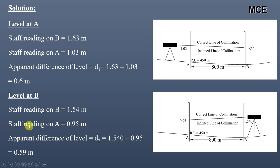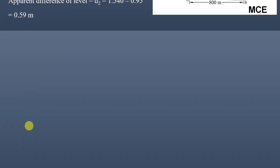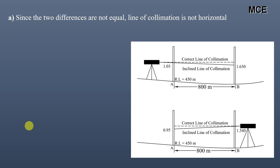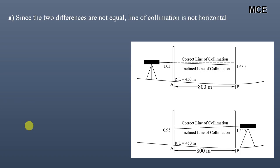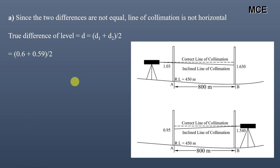The unequal apparent differences mean there is error in the line of collimation — the line of collimation is not horizontal. To find the correct reduced level of B, we first find the true difference of levels, which is simply the average of the two apparent differences: D = (D1 + D2) / 2 = (0.6 + 0.59) / 2 = 0.595 m.